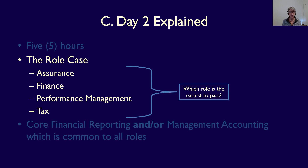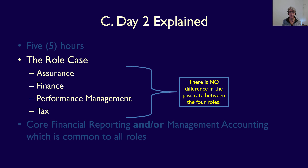One of the most frequently asked questions is whether there's a role that is easiest. I want to be super clear: there is no difference in the pass rate between the four roles. If one role were truly easiest, we would see a significant difference in pass rates — for example, people who write assurance would have astronomical pass rates while everyone else wouldn't. There is no such difference. It is not that the assurance role is easiest or hardest or anything else.